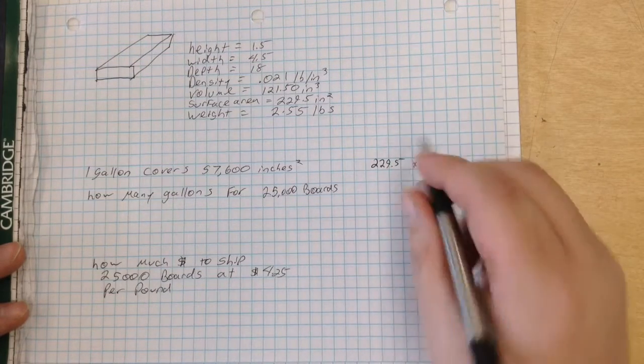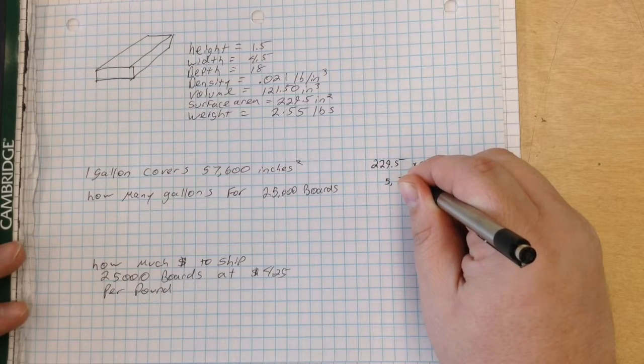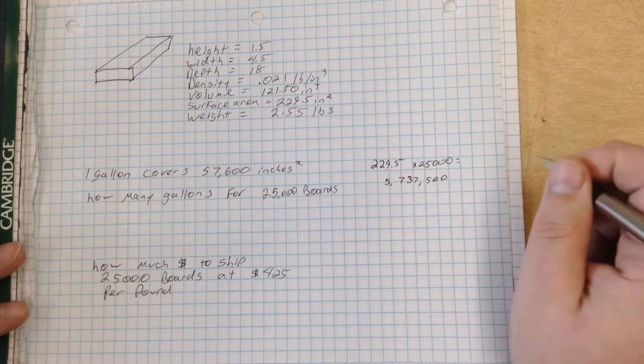So when we multiply these two numbers together, we get 5,737,500. Now next,